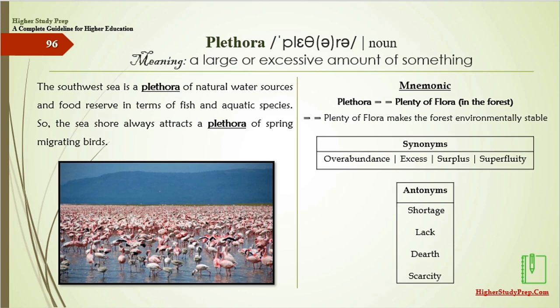Plethora means a large or excessive amount of something. The southwest sea is a plethora of natural water sources and food reserves in terms of fish and aquatic species, so the seashore always attracts a plethora of spring migrating birds. Mnemonic: plethora — plenty of flora in the forest; plenty of flora makes the forest environmentally stable. The synonyms are overabundance, excess, surplus, or superfluity, and the antonyms are shortage, lack, dearth, or scarcity.